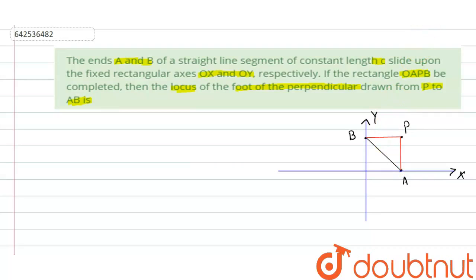Now, draw a perpendicular from P to the line AB. This is my perpendicular from P to line AB. The point where the perpendicular PM touches the line AB is my foot of perpendicular, which is point M. Let us suppose the coordinates of this point are H, K, and we have to find the locus of this point M.